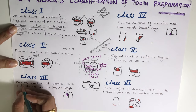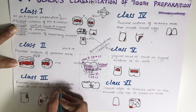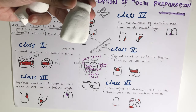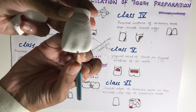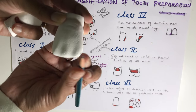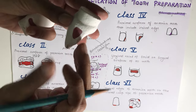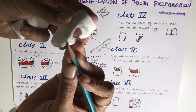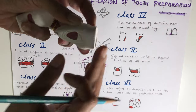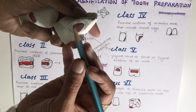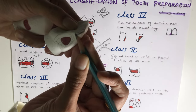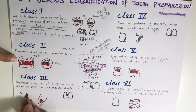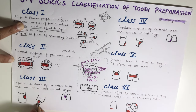Class 3 is the preparation done on the proximal surfaces of the anterior teeth that does not involve the incisal angle. On a maxillary incisor, the incisal angle and incisal edge are identified, and if the preparation is on the proximal surface without involving that angle, it is Class 3. You can see the preparation on the proximal surface of the incisor with the incisal angle intact.